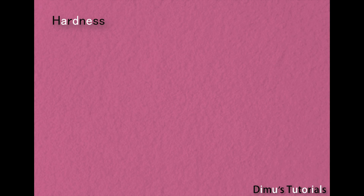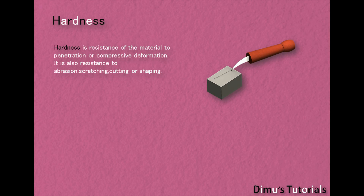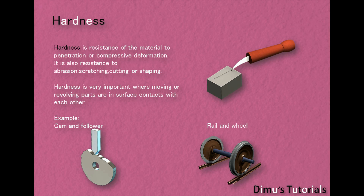Hardness. Hardness is resistance of the material to penetration or compressive deformation. It is also resistance to abrasion, scratching, cutting or shaping. Hardness is very important where moving or revolving parts are in surface contact with each other — for example, cam and follower, or rail and wheel.